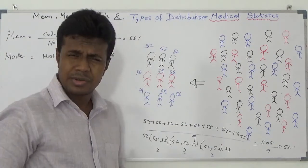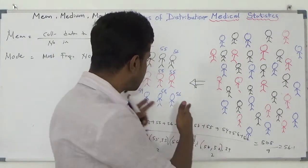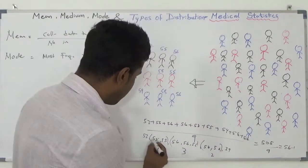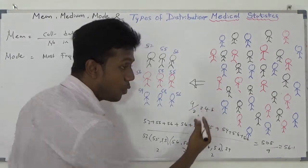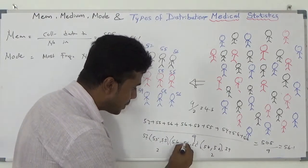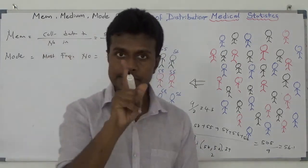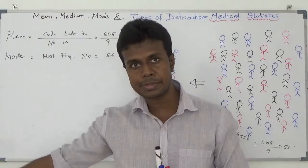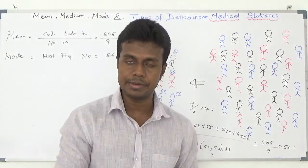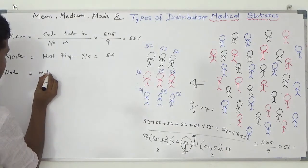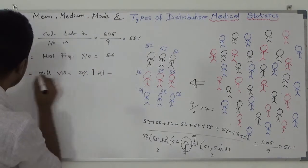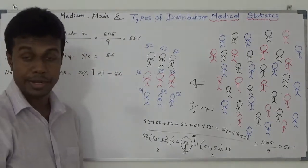Then I am going to check the middle value of this sample. There are 9 individuals. If I put 50% below and 50% above, the middle value remains. You divide 9 by 2 to get 4.5 — so 4.5 above and 4.5 below. Counting to the 5th position: 1, 2, 3, 4 — the middle value is 56. Below that, 50% of individuals; above that, 50%. So the middle value of your sample is called the median. Here, the median value is 56.